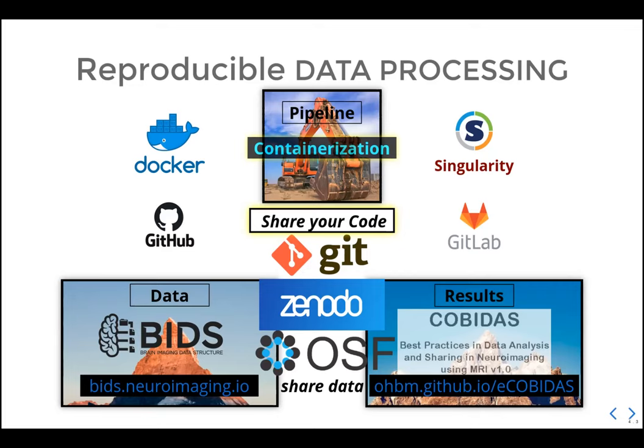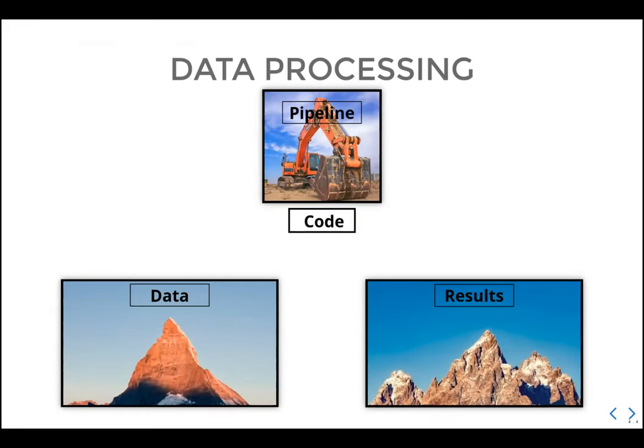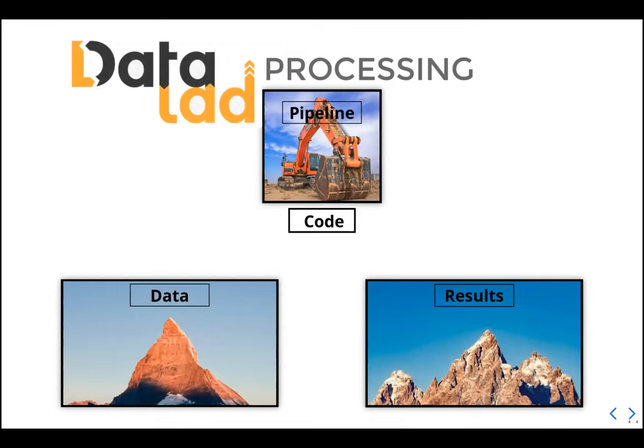Most editors have built-in Git capability, and you are only two or three clicks away from using it for your code — avoiding having 20 versions of the same script in one folder with different names. You get a properly tracked development history. But actually, DataLad can automate a lot of this for you and help with all of it.